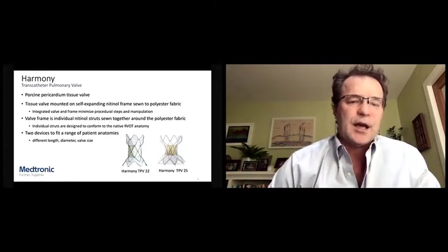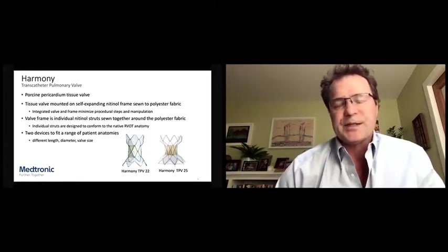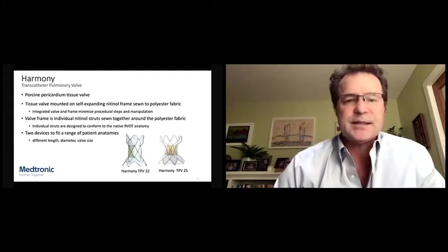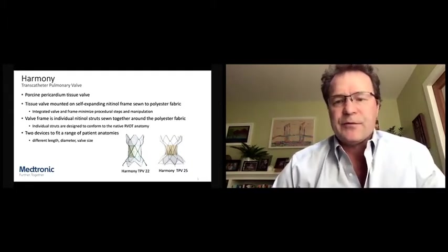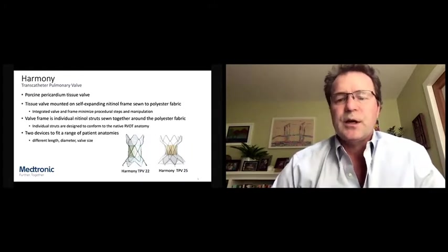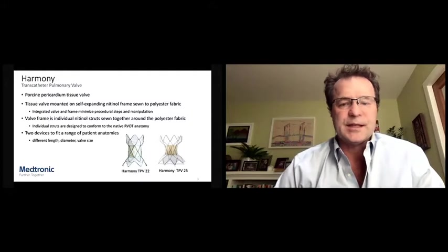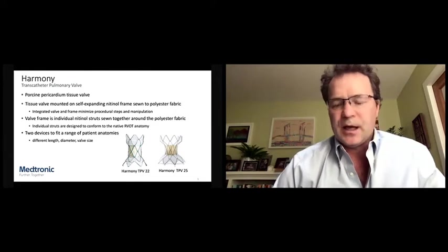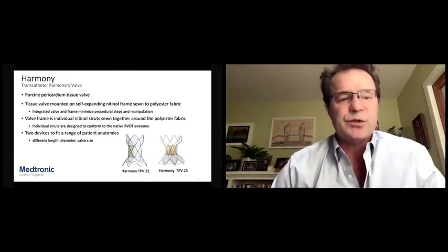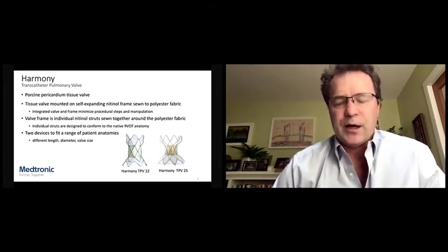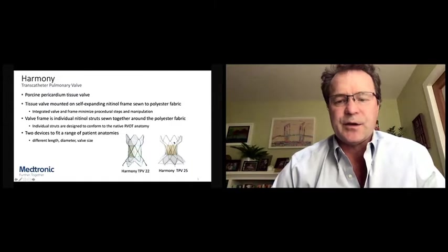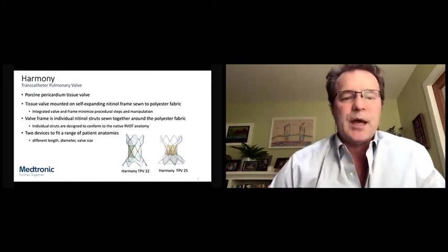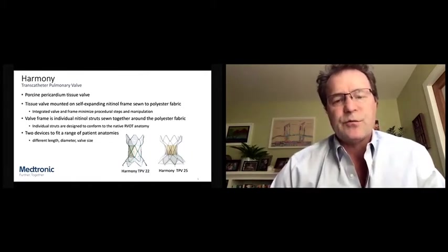So the Harmony valve is a porcine pericardial tissue valve that is designed for transcatheter implants. The valve itself is laser cut. It's mounted on a self-expanding nitinol frame, and that frame is covered internally with a polyester fabric. This is an integrated device. So it's a single device for a pulmonary valve implantation. And the structure of it is characterized by individual rows of nitinol wire that are then sewn together.